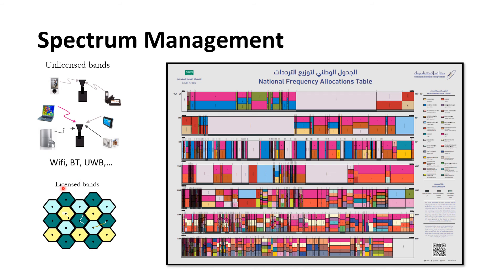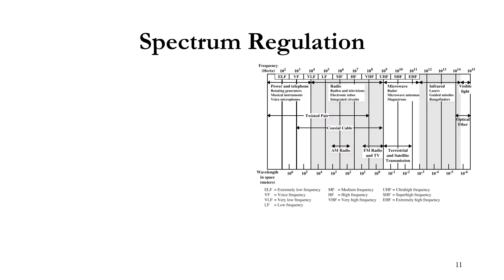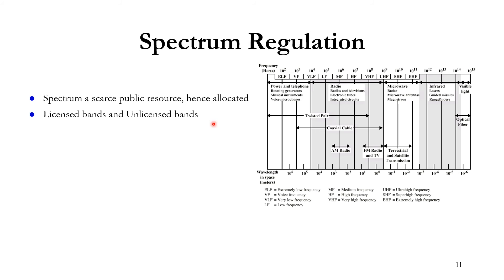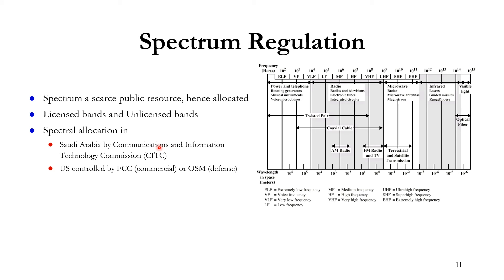We also have licensed bands that require regulatory approval — for example, cellular systems. The spectrum spans from extremely low frequency up through medium and high frequencies. For wireless communication we are concerned from about 10 kilohertz up to tens of gigahertz. Spectrum is a scarce public resource and must be allocated. Spectrum allocation in Saudi Arabia is done by the Communications and Information Technology Commission (CITC), and some of our students work there.